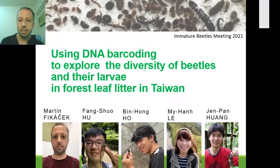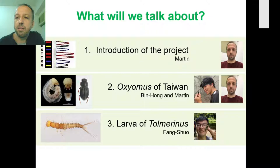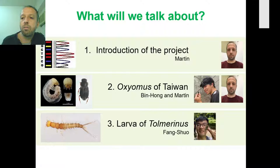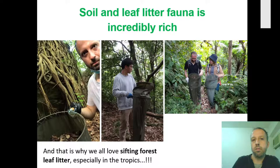To show you what we will talk about, this talk will have three parts. First will be the general introduction of the project and a brief summary of our preliminary results. Then we will switch to some actual beetles. First, we will talk about Oxiomus beetles, which Bing Hong will tell you about with a little support from me. Then Feng Shuo will introduce you to a surprising discovery of the larva of Tolmerimus, which is his special group. So let's start.